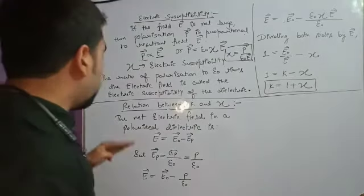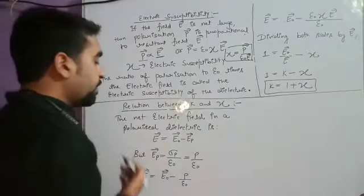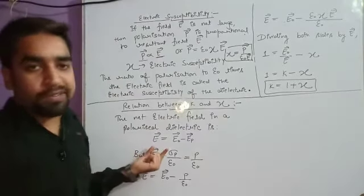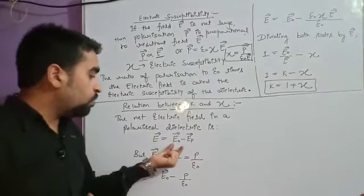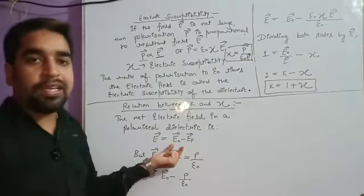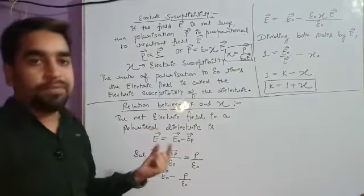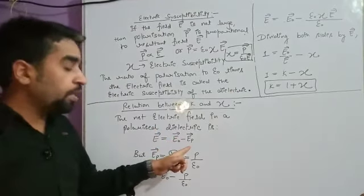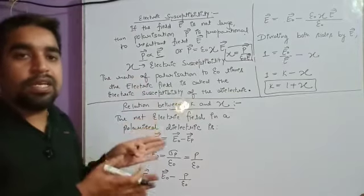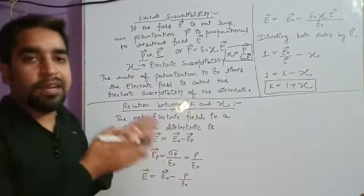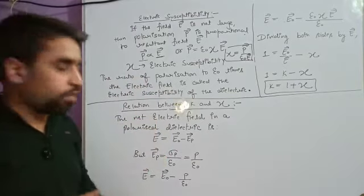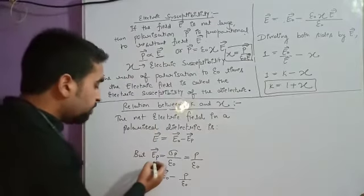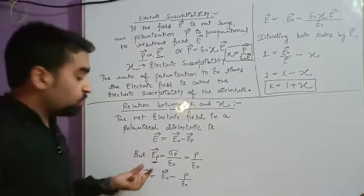The net electric field in a polarized dielectric is E = E₀ minus Ep. E₀ is the original applied field, and Ep is the polarized field, which is introduced because of the dielectric material when a slab is placed between the two parallel plates of a capacitor. So the net field is E = E₀ minus Ep.